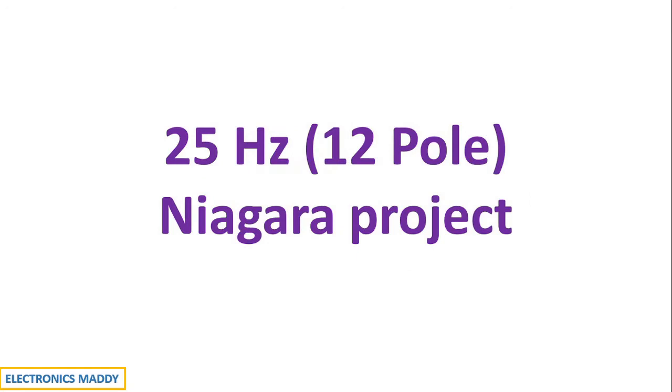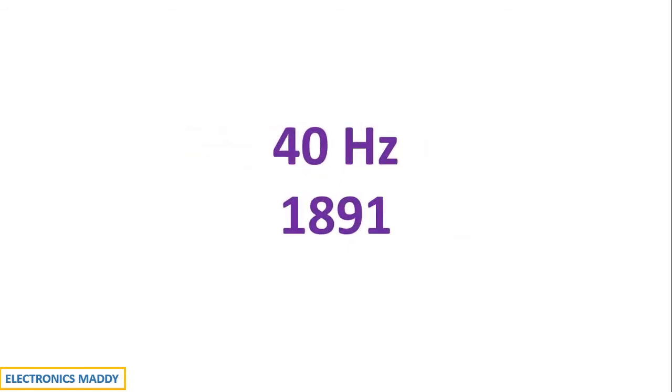Similarly, frequency of 25 Hz with 12 poles were used in Niagara project. 40 Hz frequency was used in the year 1891 and the experimentation was done with different frequencies and it kept on continuing in the 18th and 19th century.